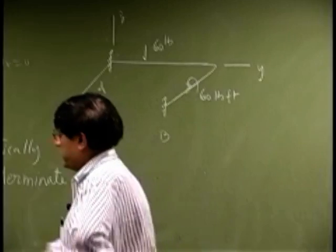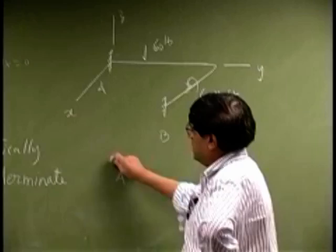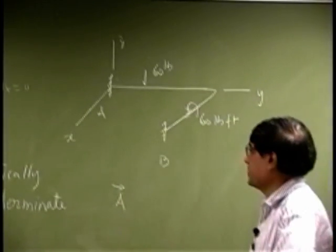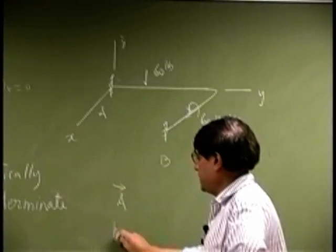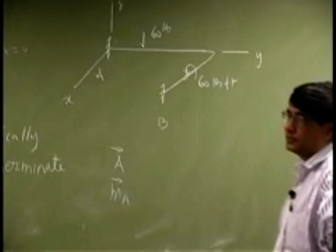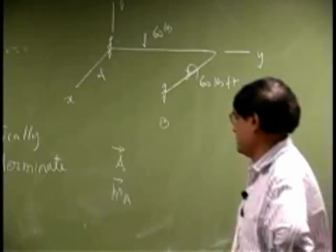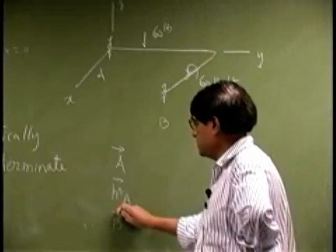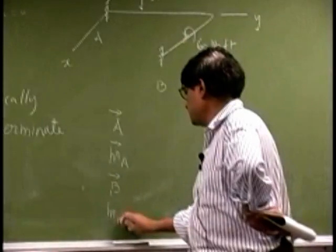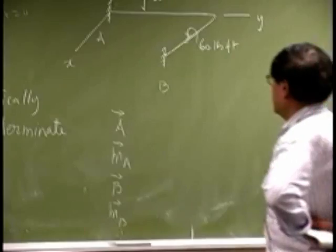Now if I start looking at the reaction you have at A, this is going to be a reaction force A. In addition to this, there will be a couple, call this MA. Same thing is going to happen at point B - you will have a reaction which is going to be B, and this is going to be a couple which is going to be MB.